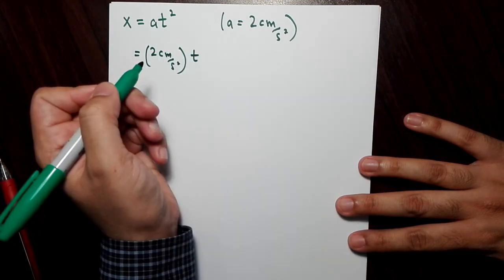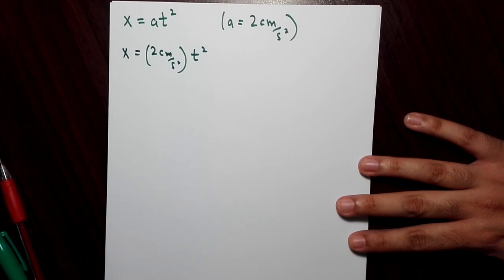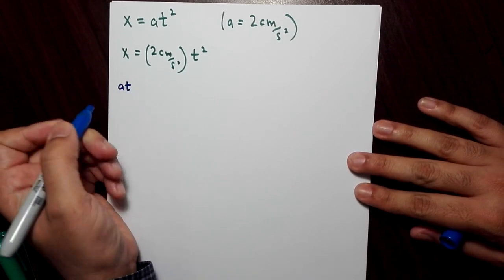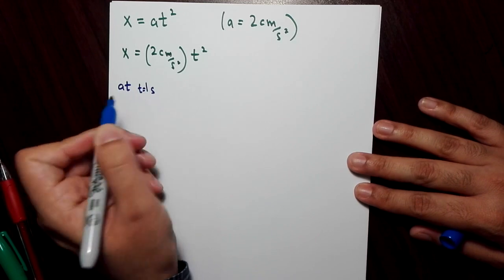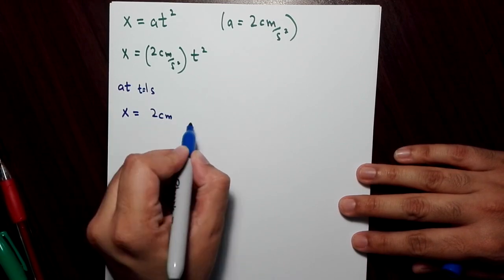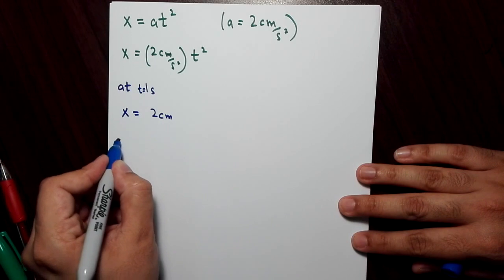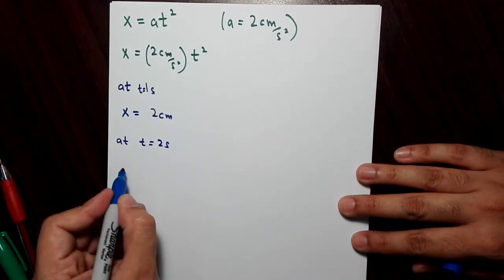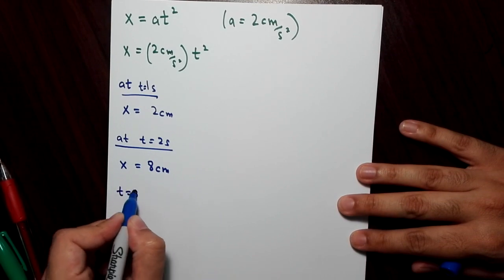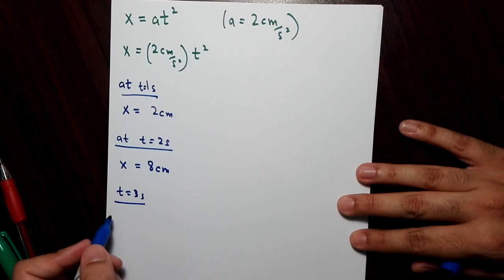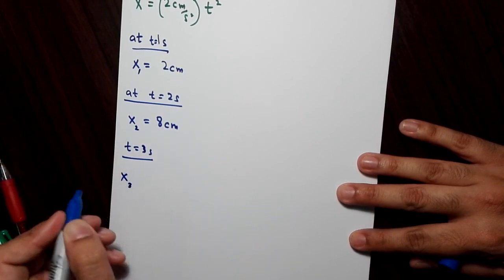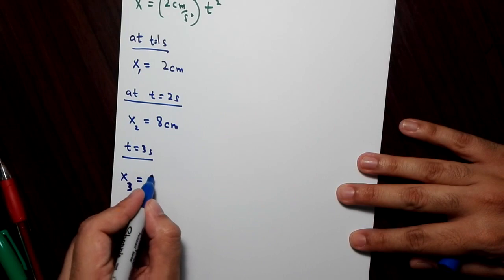At t equals one second, the object will be at x equals two centimeters. At t equals two seconds, it's going to be four times two, that's eight centimeters. At t equals three seconds, you get nine multiplied by two, that's 18 centimeters. Let's call these x1, x2, x3.